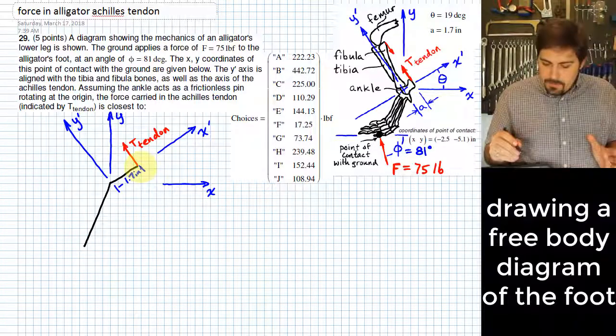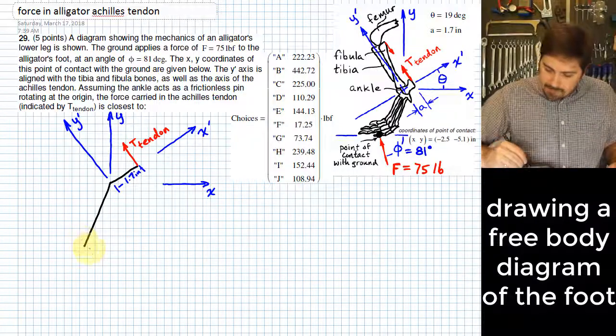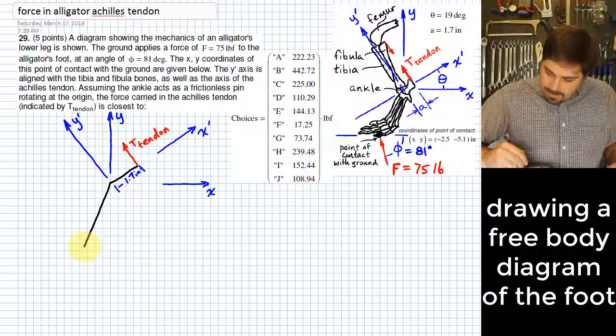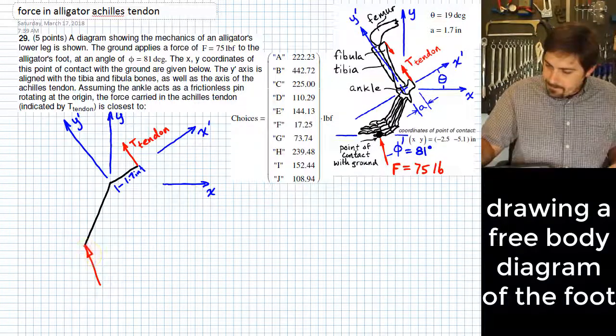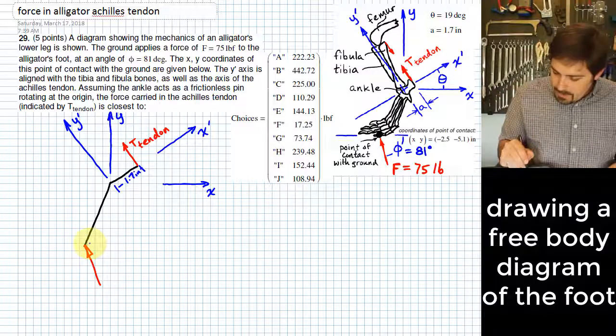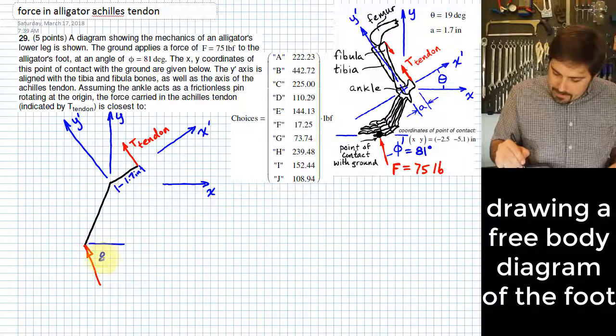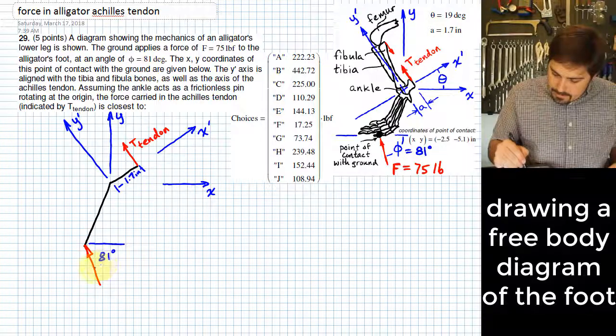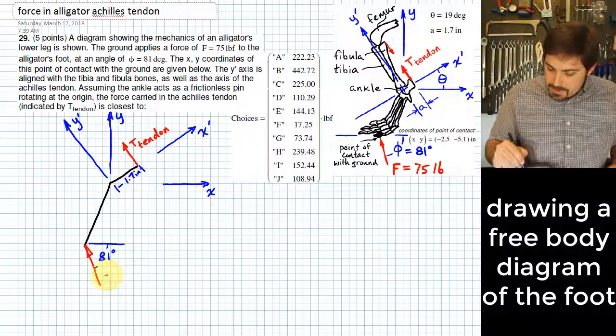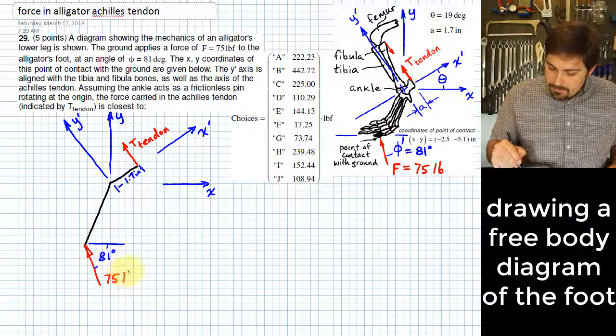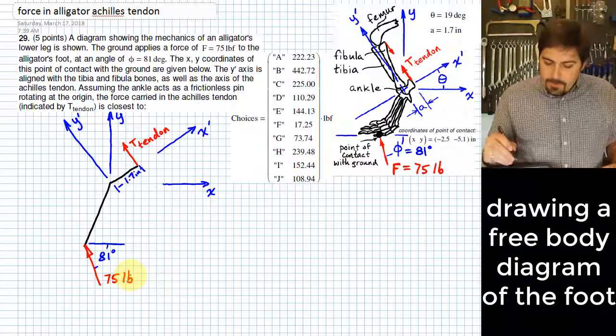All right, so far so good. The next thing I want to put on here is our force of 75 pounds. It's down here, and it looks like it points not quite straight vertically. And the angle is given there of 81 degrees. As we said at the very beginning, this force is 75 pounds. So far so good.